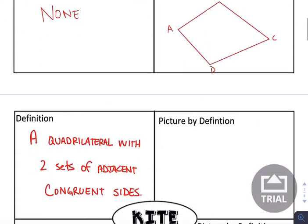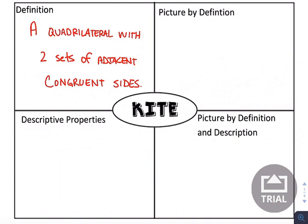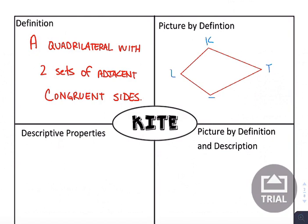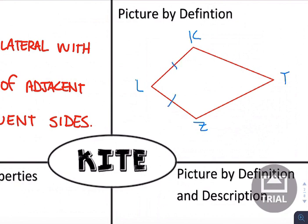Hopefully the next one will make a little more sense as we move on to what we call a kite. A kite is a quadrilateral with two sets of adjacent congruent sides. What I mean is a kite has two sides that are touching in a row that you can consider to be congruent. If we name this LKTZ, what I mean by two sets of adjacent congruent sides is these sides have to be congruent — they're touching here at L and they're congruent. We have another set of congruencies touching here at T. So this is kite LKTZ.